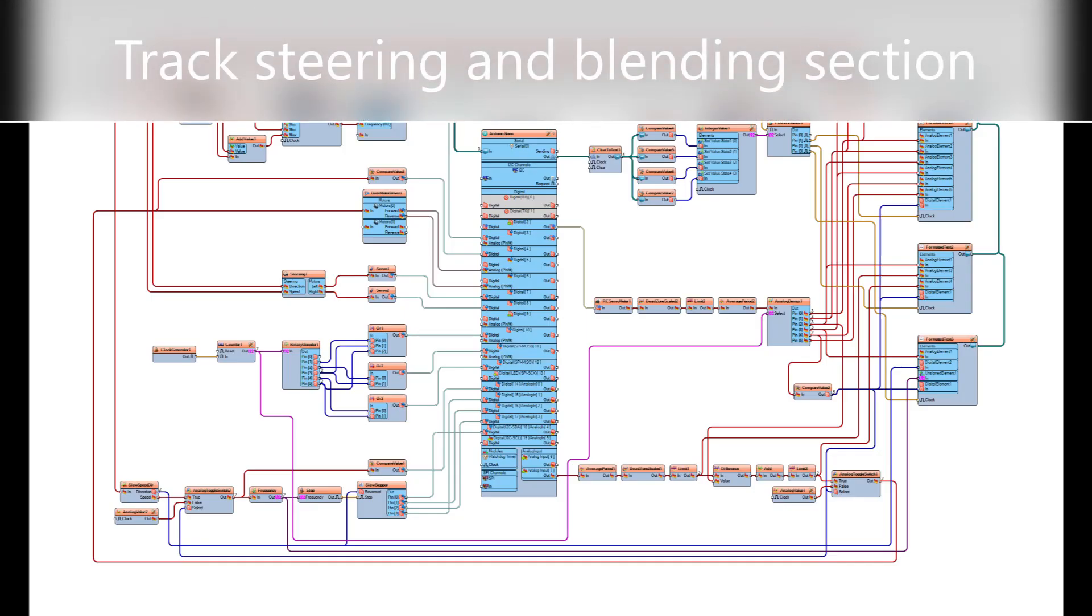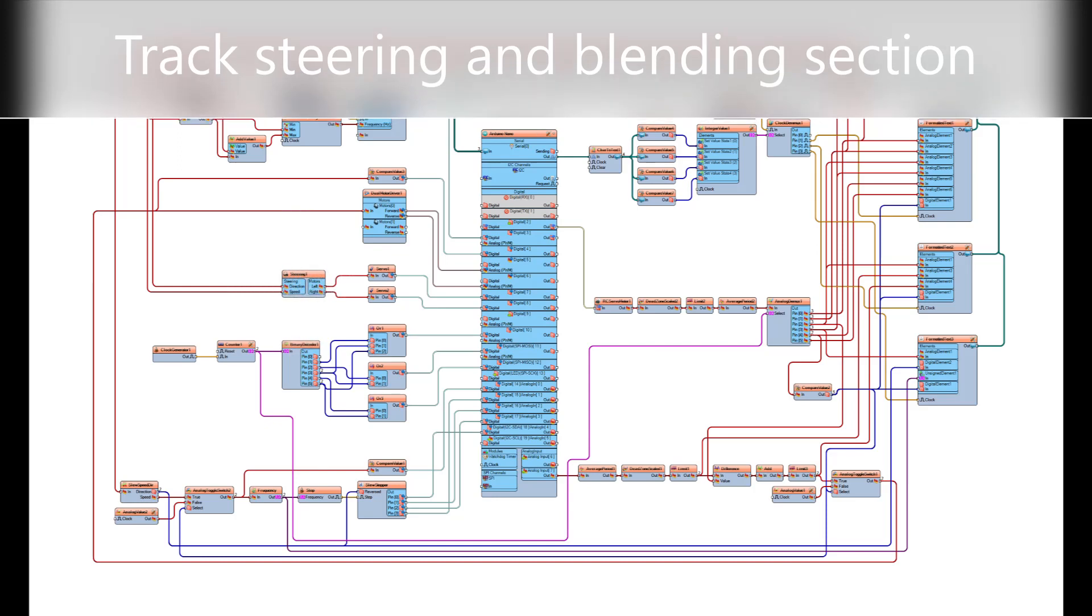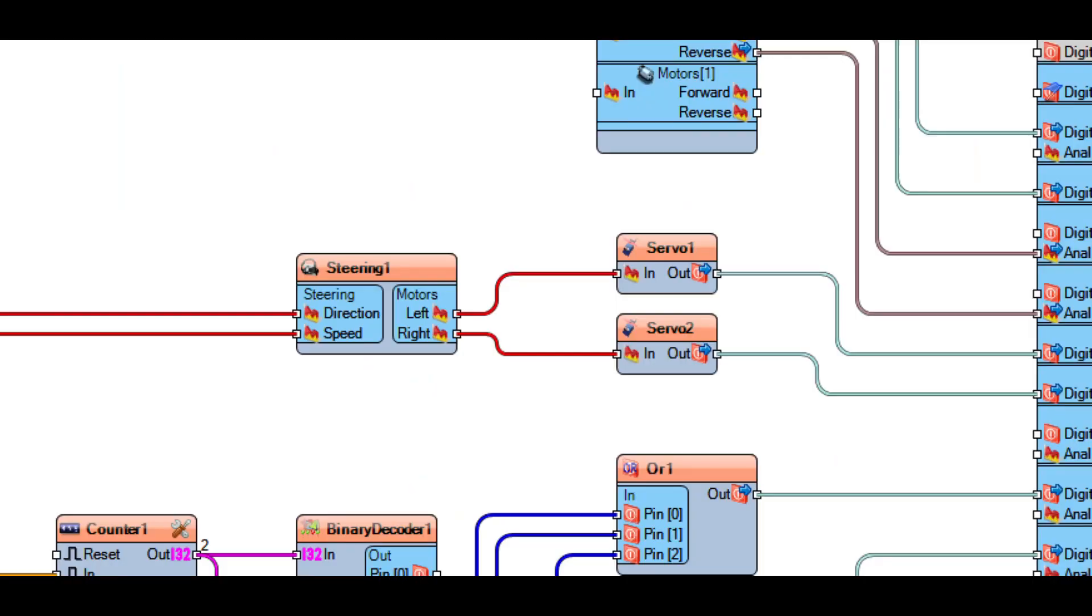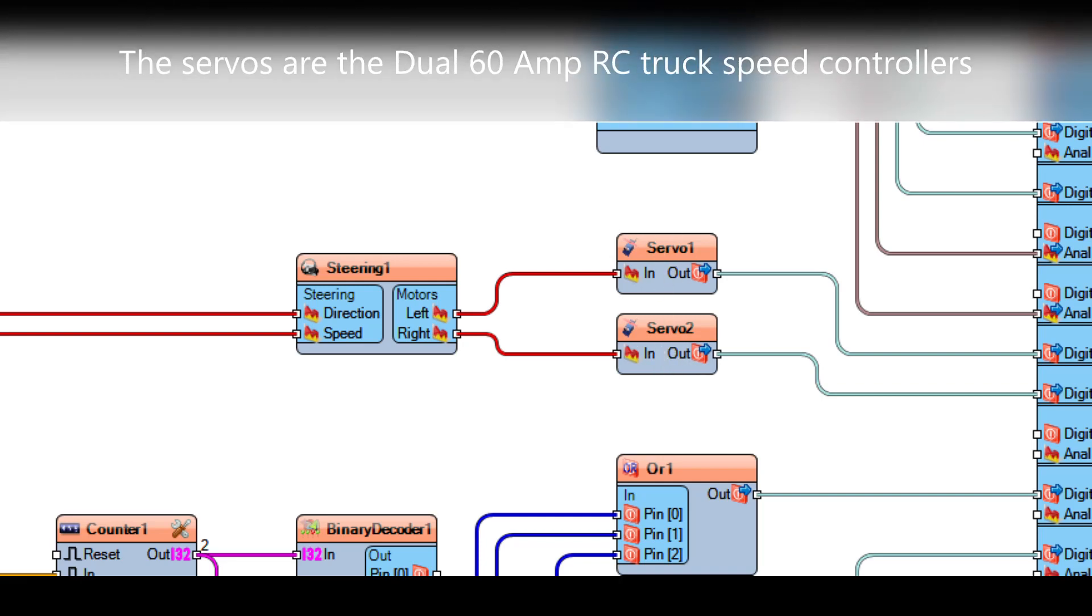Now next up we're going to look at the steering blending for the two track drives. Throttle and direction are fed into the steering differential block and it goes out to the two servos. These two servos represent dual 60 amp speed controllers for the drive motors.